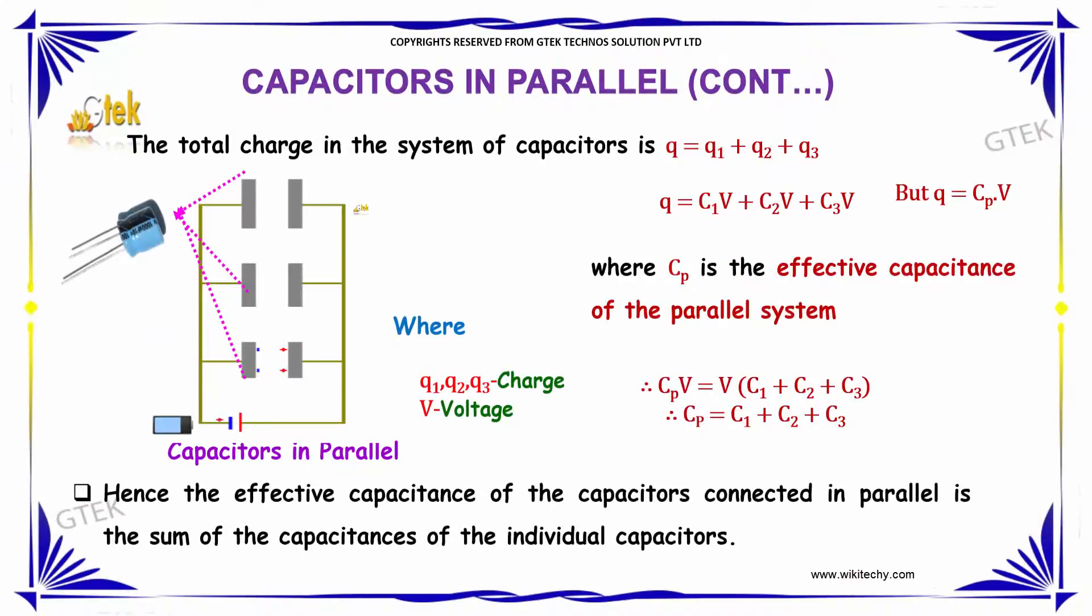The total charge in the system is Q = Q1 + Q2 + Q3. Substituting the values, we get Q = C1V + C2V + C3V.